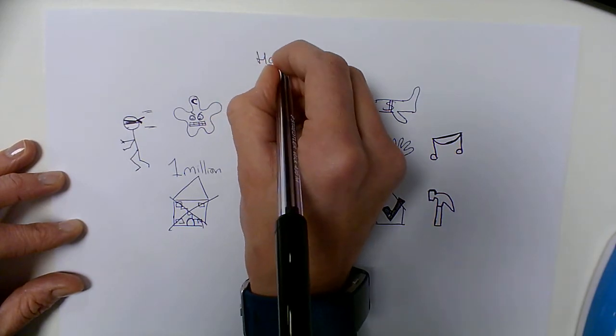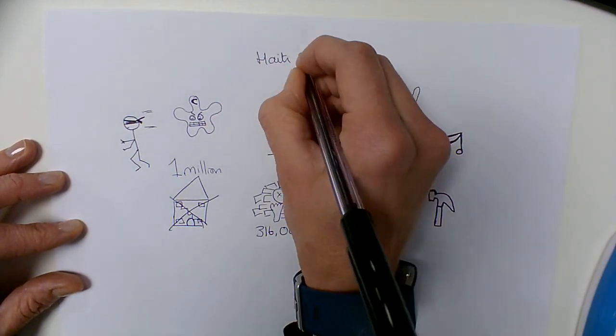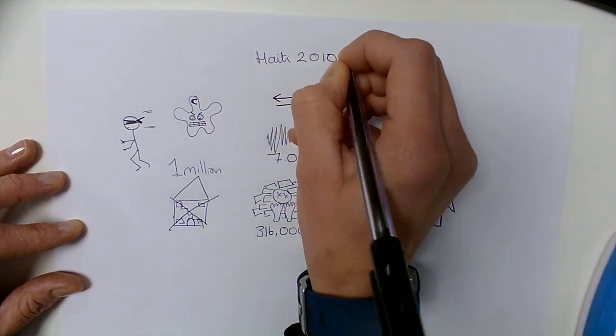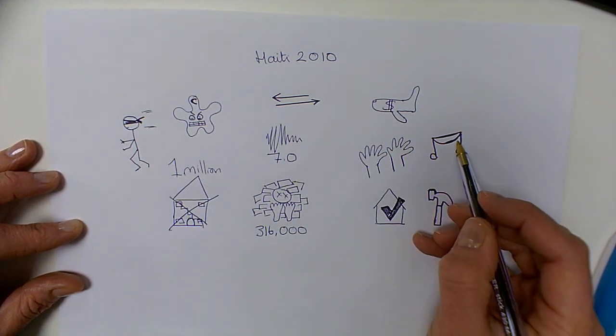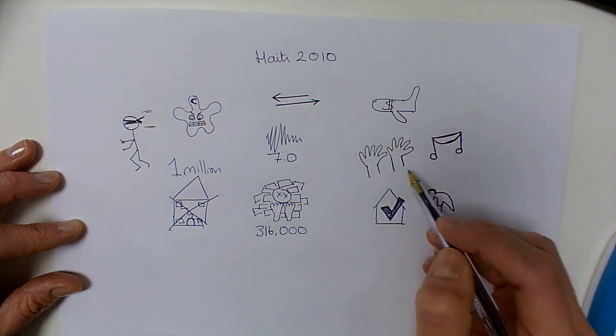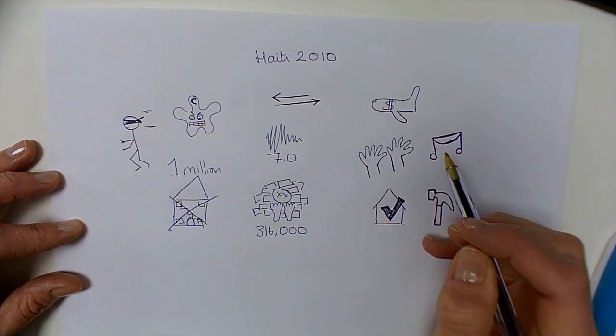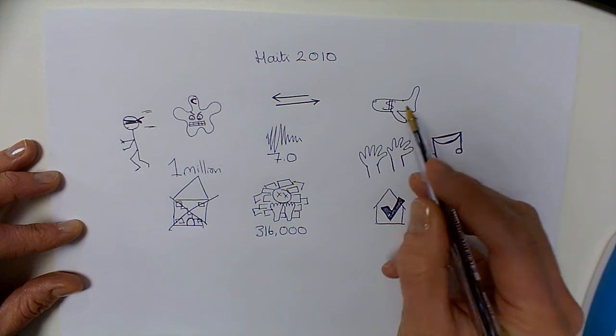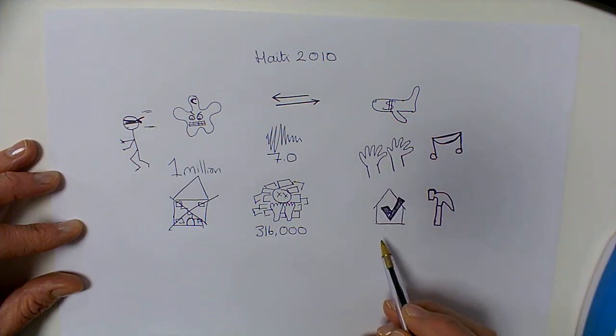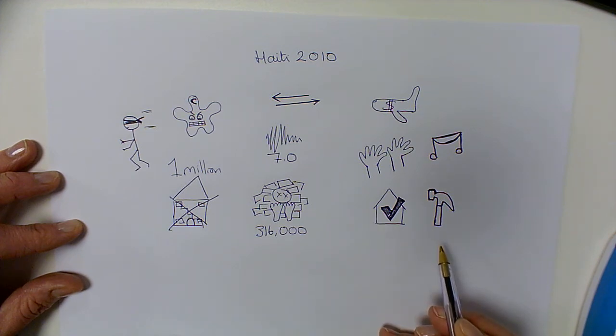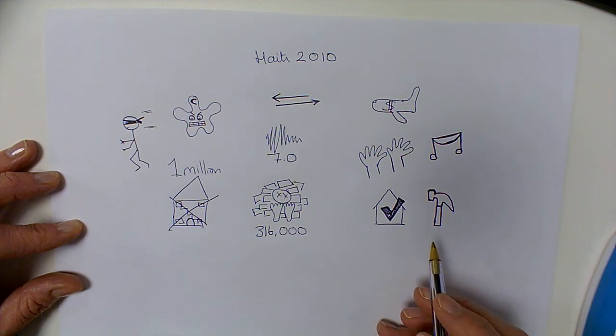So there you have your Haiti case study, your Haiti earthquake which happened in 2010, your primary effects, secondary effects, your immediate responses, things that happened straight away, saving lives, and then our longer term responses to try and get people's lives back to normal.